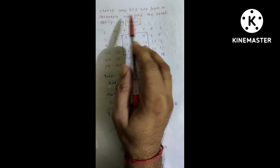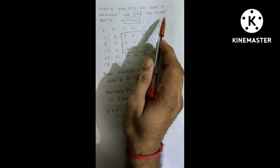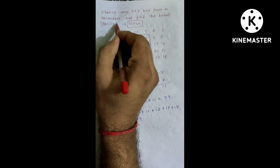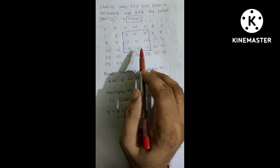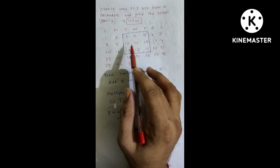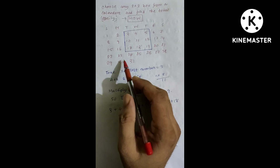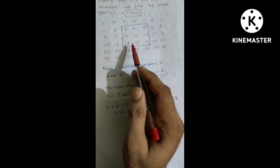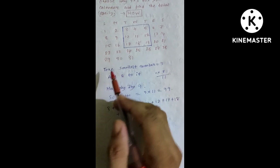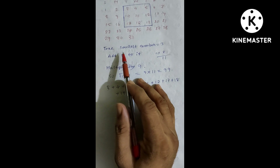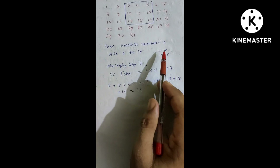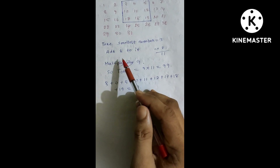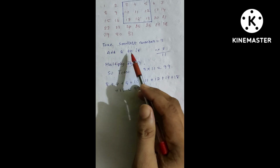Choose any 3x3 box from the calendar and find the total. We choose a 3x3 box and find the smallest number in that box. We should use the smallest number — in this case, which is 8.